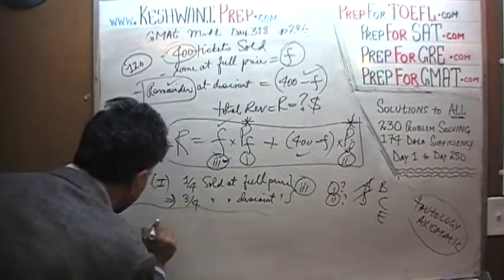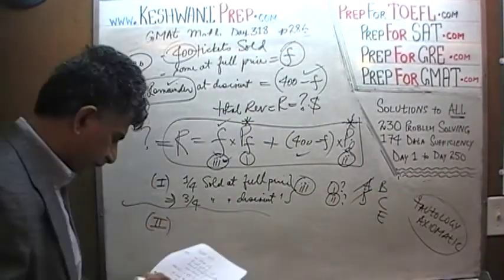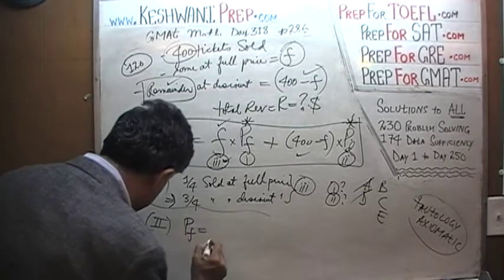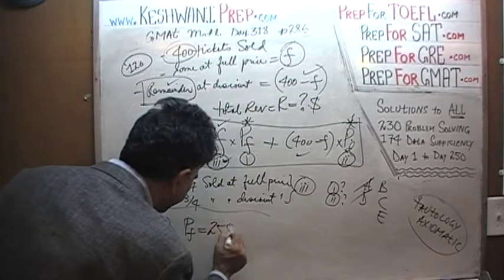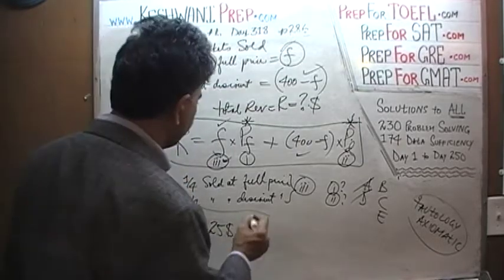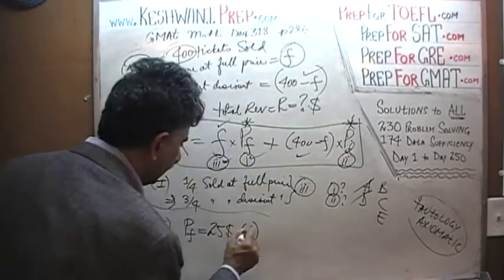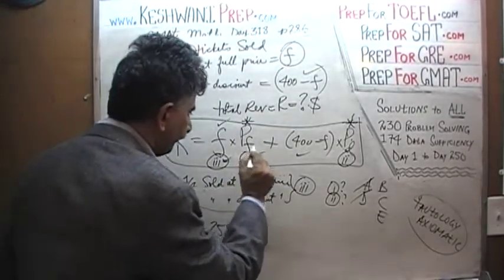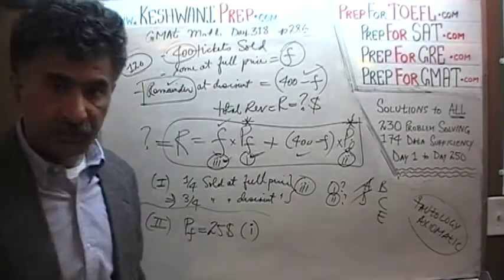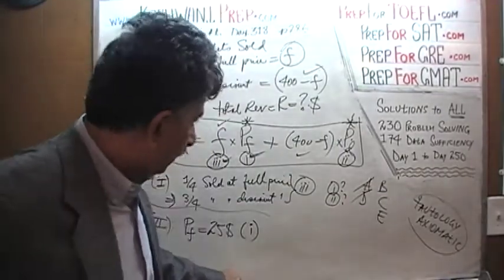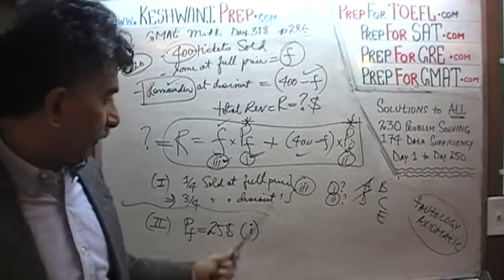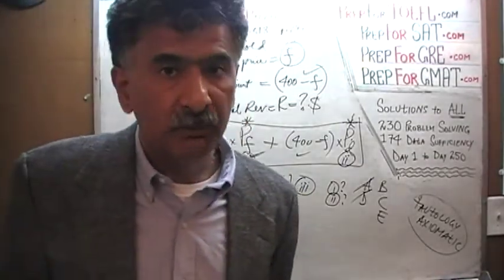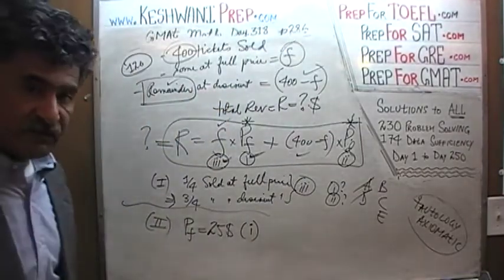The second statement tells us that the full price is $25. This gives us the first piece of information — the full price. However, we still do not know the discount price, and by itself we also don't know how many tickets were sold at each price. The second statement by itself is not sufficient either.